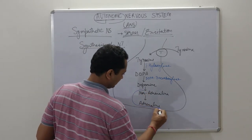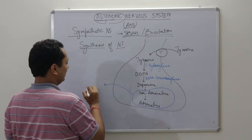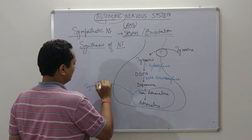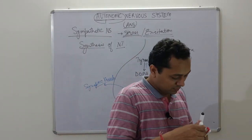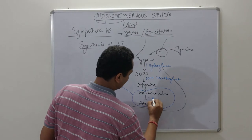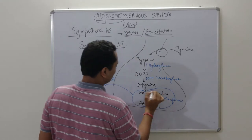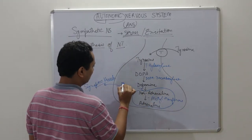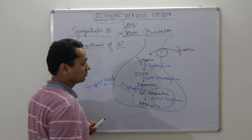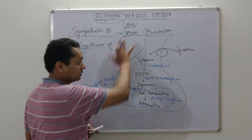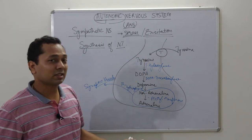One important point: these neurotransmitters are stored in synaptic vesicles, so this conversion process happens inside the synaptic vesicles. The enzymes responsible here are methyl transferase and dopamine beta-hydroxylase. This is the actual process through which neurotransmitter synthesis for the sympathetic nervous system takes place.